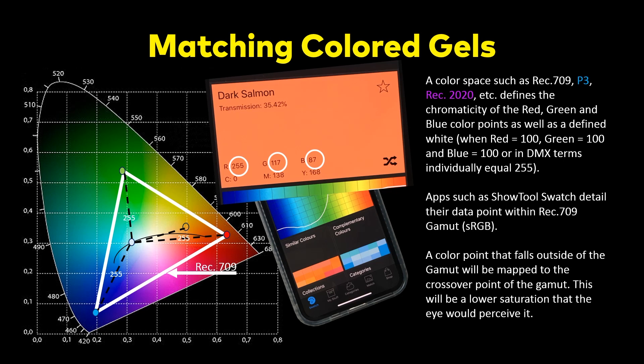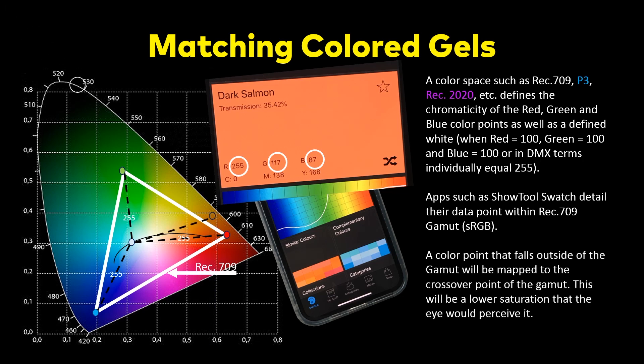This is where the color matching between manufacturers gets interesting, because the same RGB values entered into different manufacturers is going to render out differently. So even a color point that falls outside is still going to be reproduced within this program at 709 — but it'll be desaturated, and it'll fall on that hue angle where it crosses into the gamut.